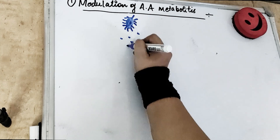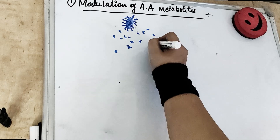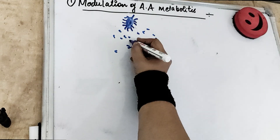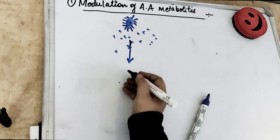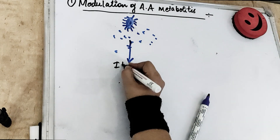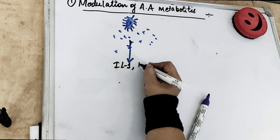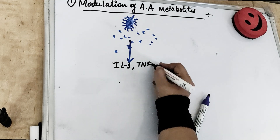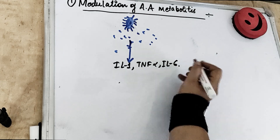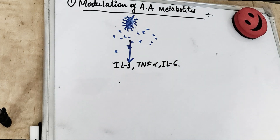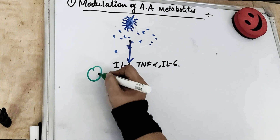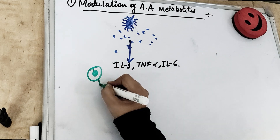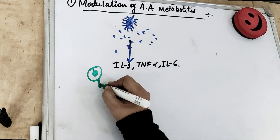The level of PGE2 increases with periodontitis — this was shown by Plamondon and Sorsa in 2002. So if we decrease PGE2, there may be a decrease in periodontitis. By giving NSAIDs such as indomethacin, naproxen, and flurbiprofen (like ibuprofen), we block arachidonic acid conversion to prostaglandins, decreasing gingival destruction. When bacteria release lipopolysaccharides, the body releases interleukin-1, TNF-alpha, and interleukin-6.